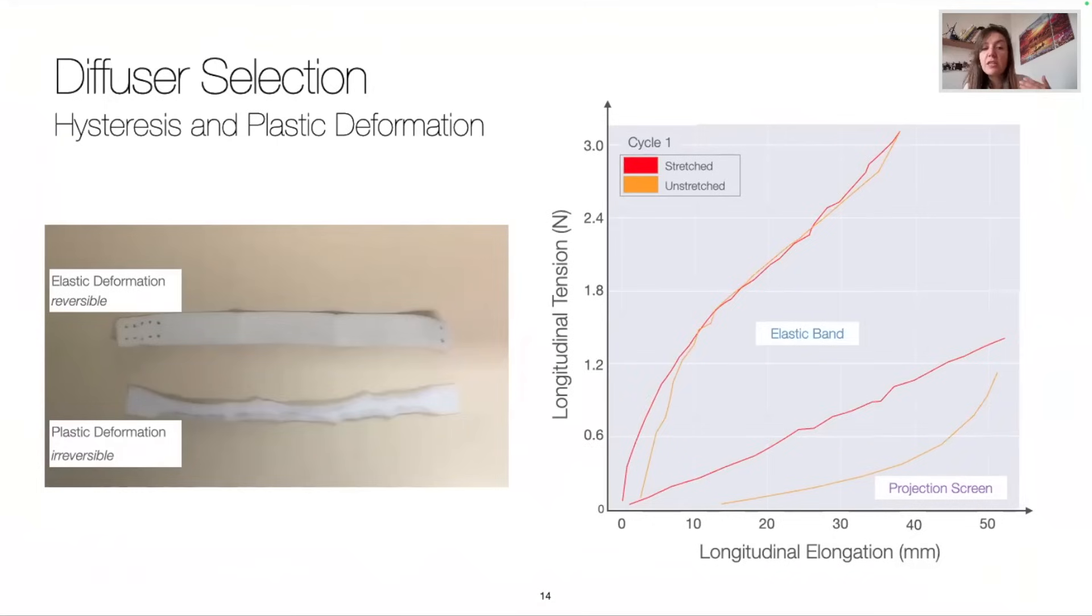However, when being relaxed, the projection screen follows another curve. The same thing occurs for the second cycle. So this means that the elastic bands does not suffer from hysteresis in our range of deformation, while the projection screen actually does.